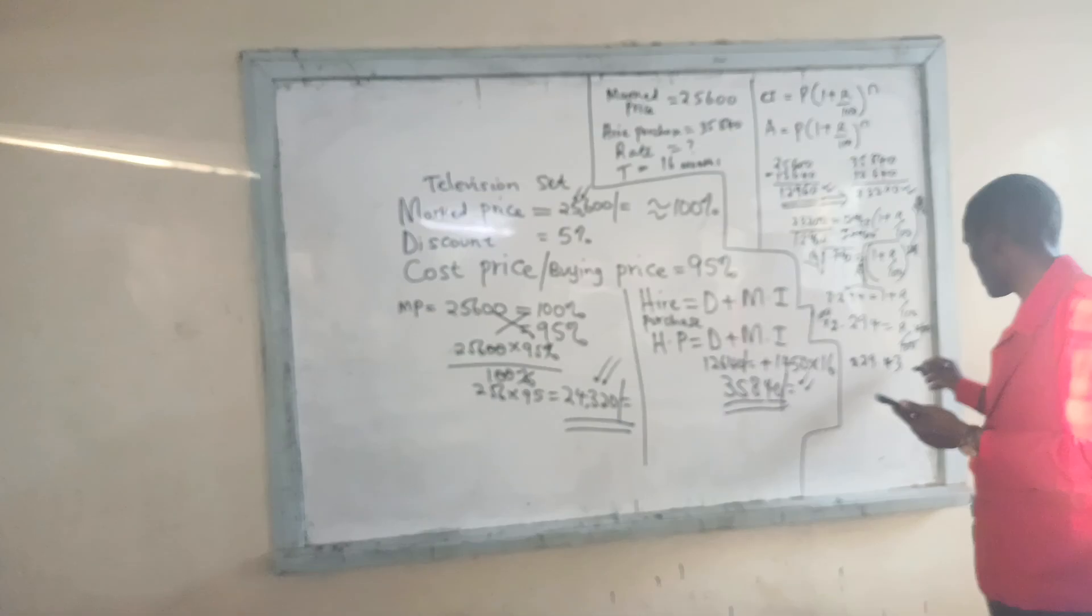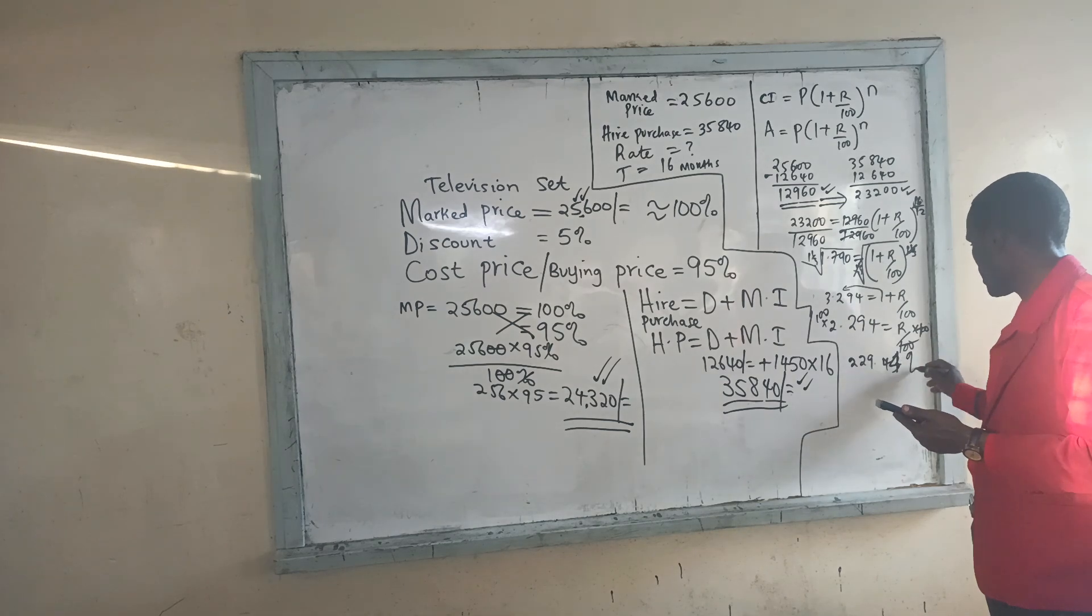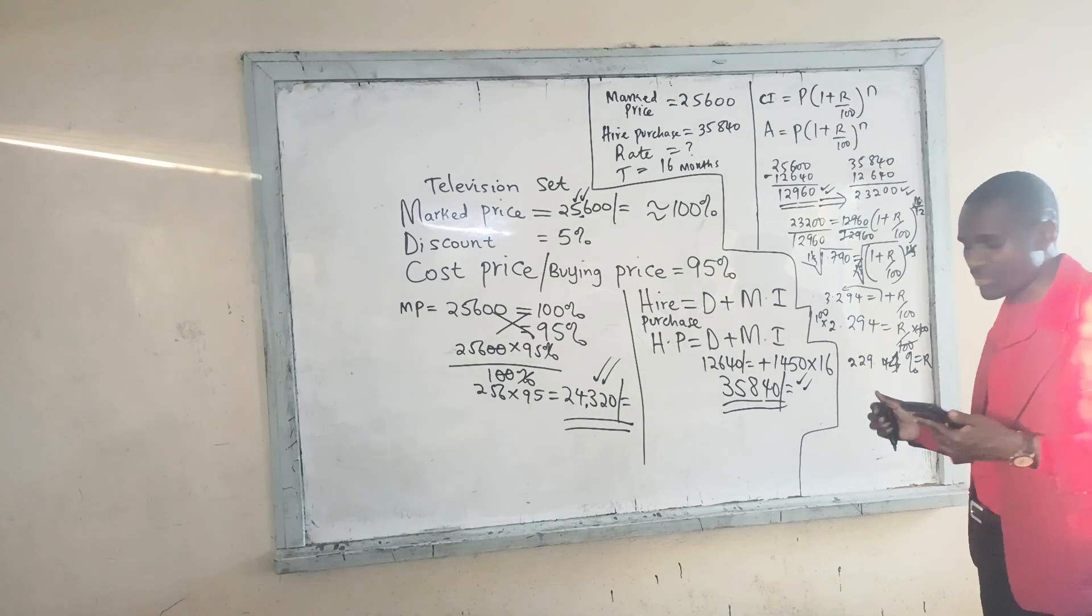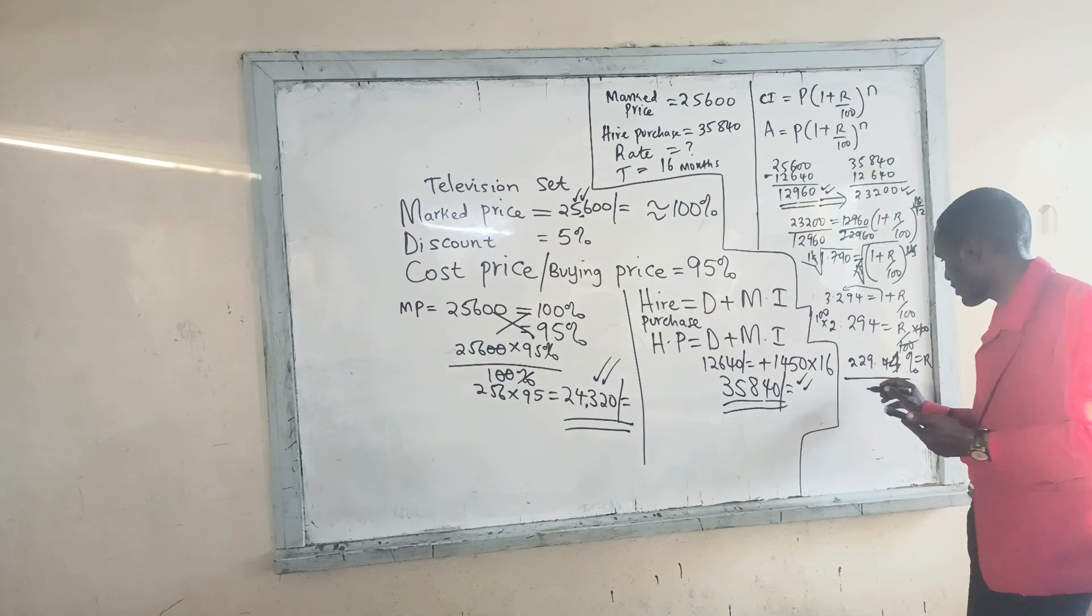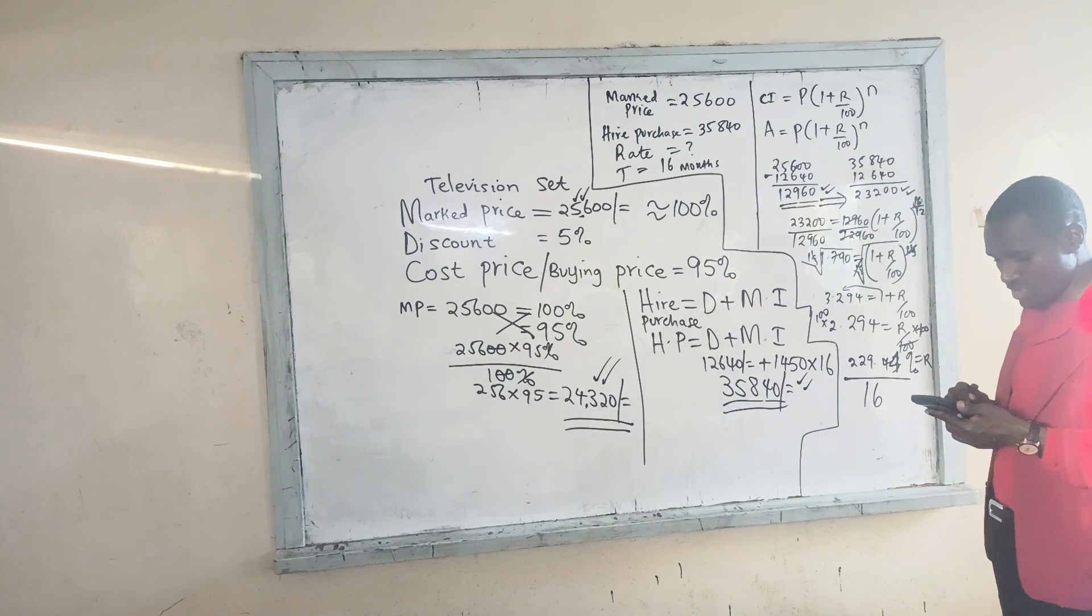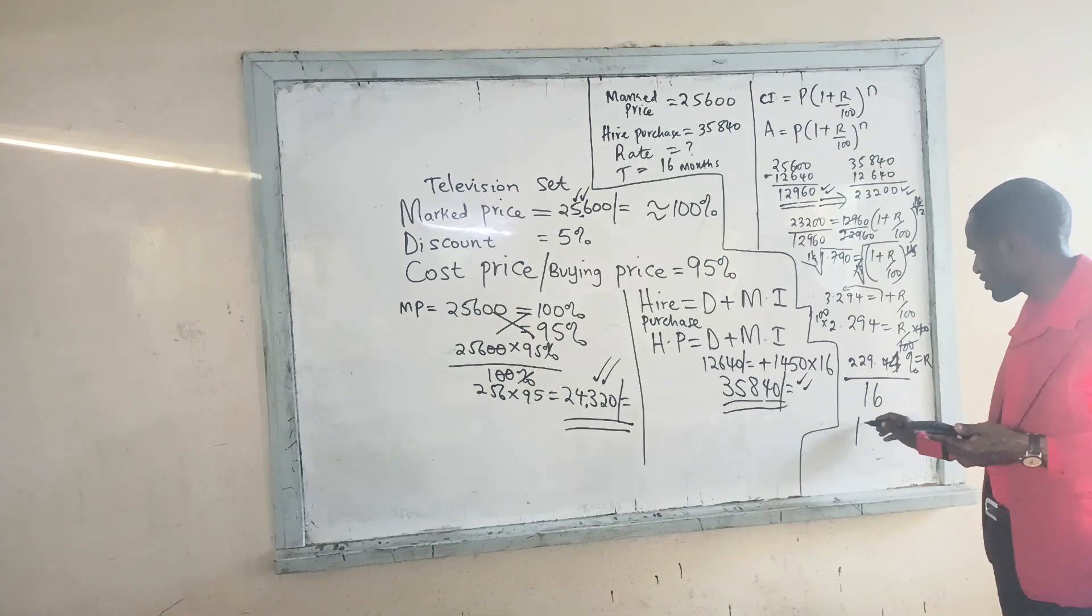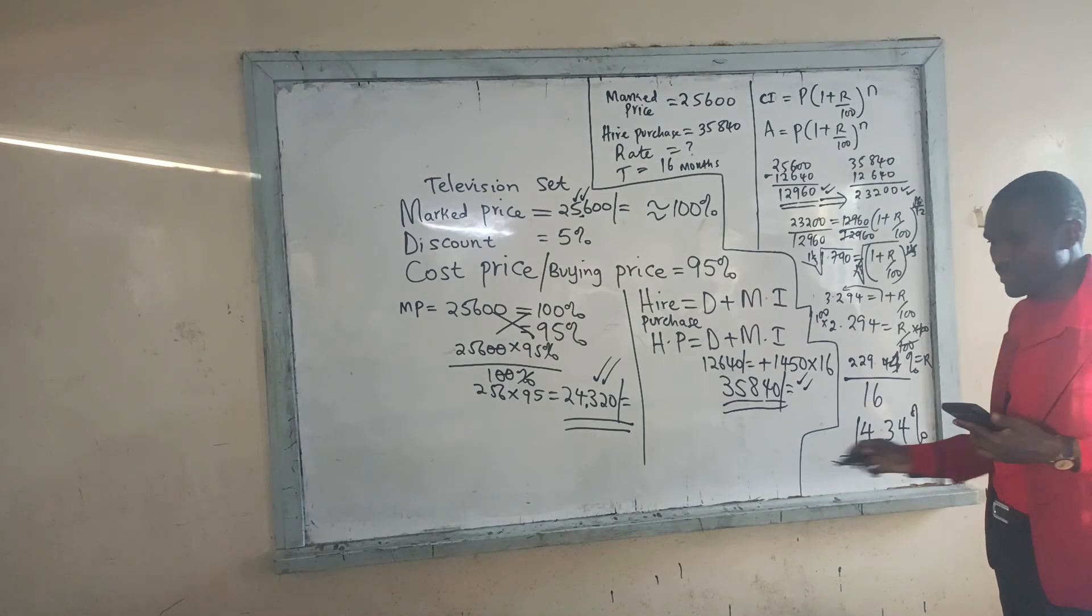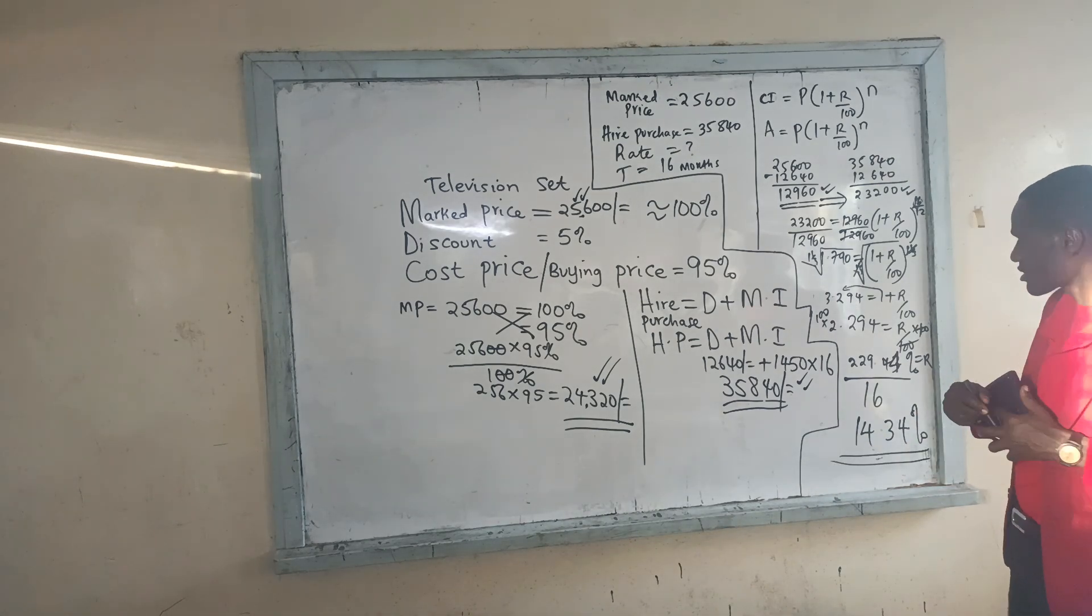Okay, I'll say 229.4%, but this is for a yearly basis, so I'll divide this by 16 months to see what was the monthly rate, so we use 14.3 or 14.4%. Correct?